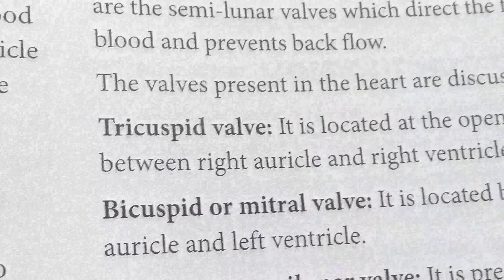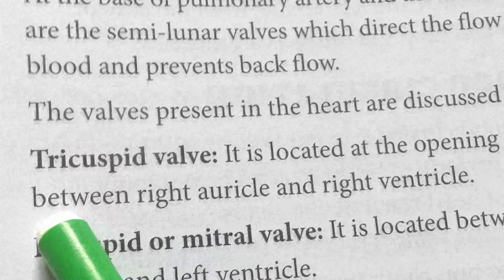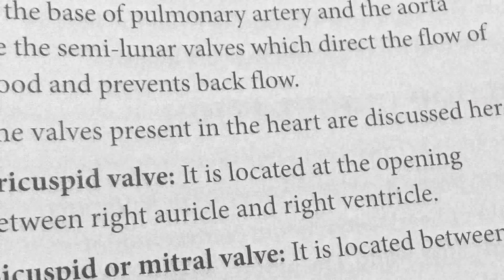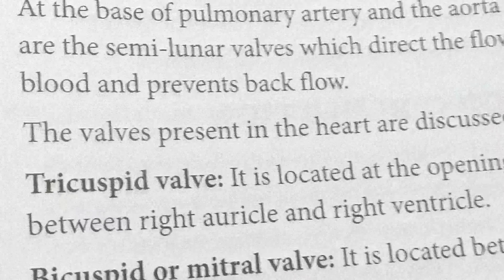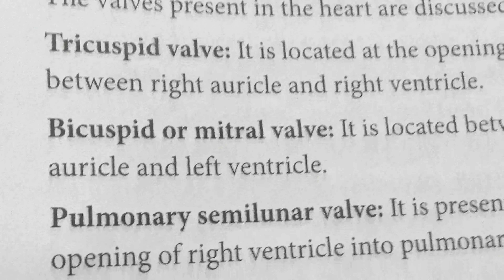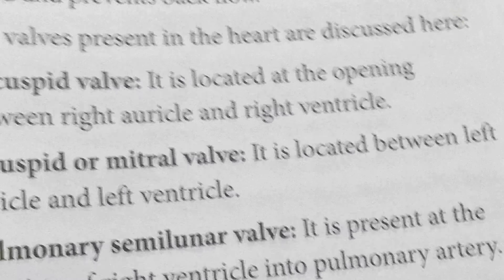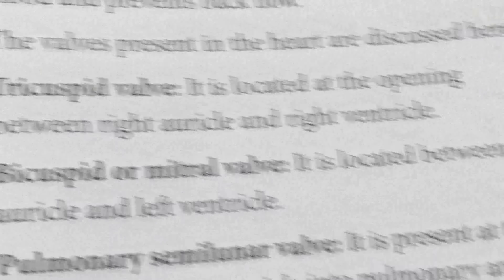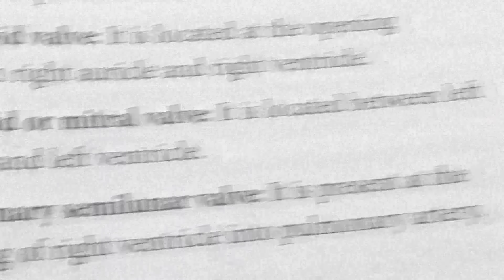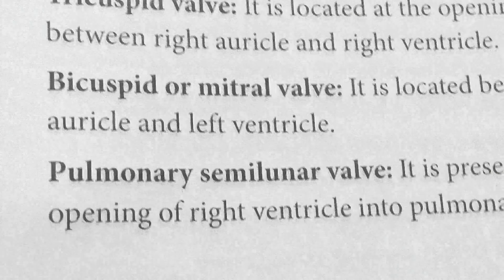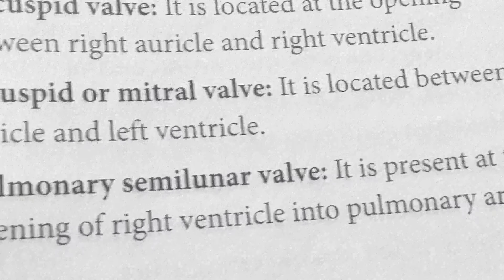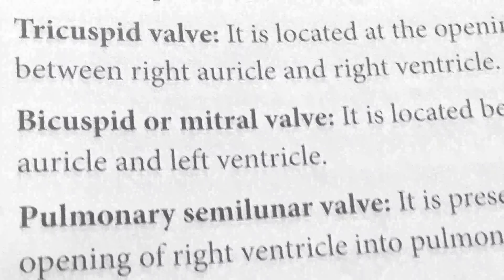The tricuspid valve is located at the opening between the right auricle and right ventricle. The bicuspid or mitral valve is located between the left auricle and left ventricle. The pulmonary semilunar valve is present at the opening of the right ventricle into the pulmonary artery.